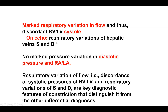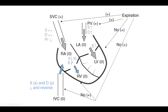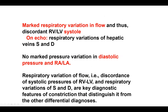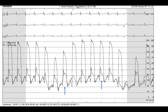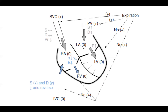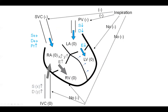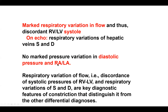Same on echo. Another landmark finding in constrictive pericarditis is that diastolic pressures do not change — systolic pressures vary dramatically, while diastolic pressures do not change much. That's the Kussmaul sign. You'll see the JVP and also the RA pressure does not change much because of that lack of direct pressure transmission to it in inspiration.